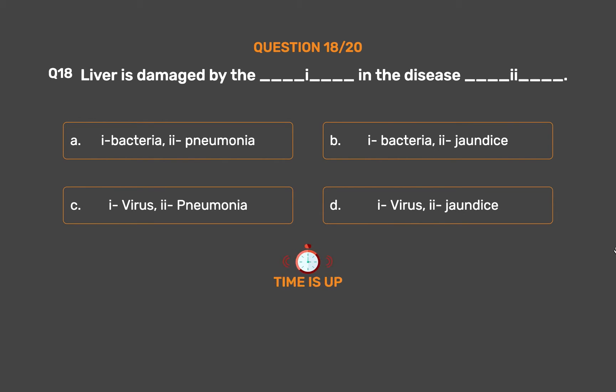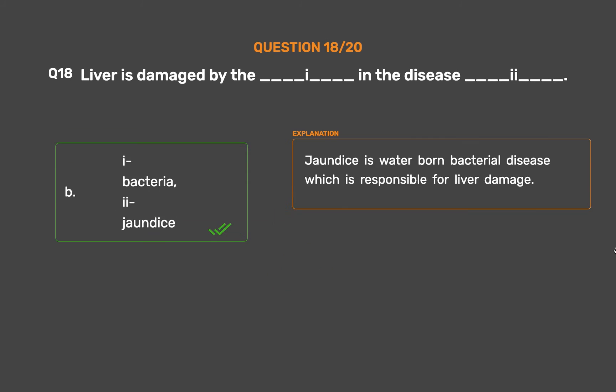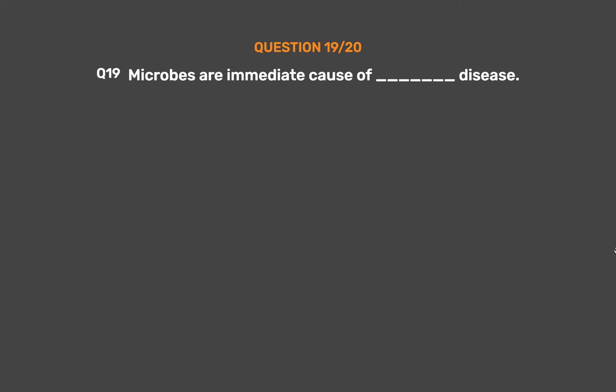The correct answer is Option B: Bacteria — jaundice. Jaundice is a waterborne bacterial disease which is responsible for liver damage.